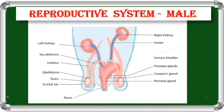The epididymis leads into the sperm duct called vas deferens. The vas deferens joins the urethra just below the urinary bladder. The urethra passes into the penis. So the male reproductive system is related with the excretory system.